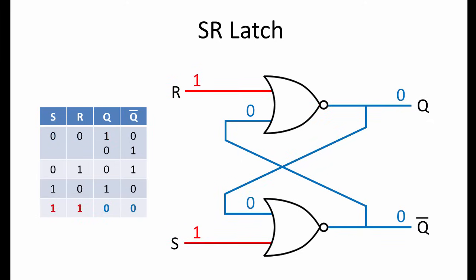Now, the only circumstance we haven't considered is when both inputs, S and R, are set to 1 at the same time. If this were to occur, we'd be telling the SR latch to set the value of Q to both 1 and 0 simultaneously. In reality, Q would become 0, and not Q would also become 0.